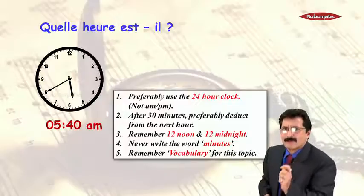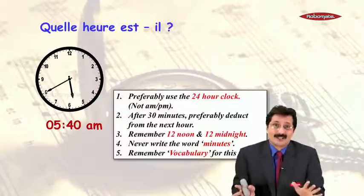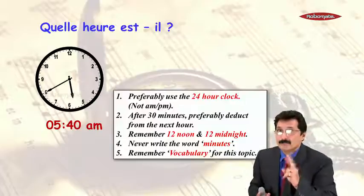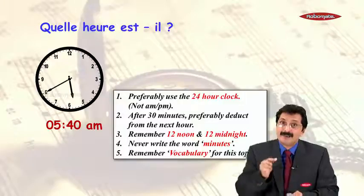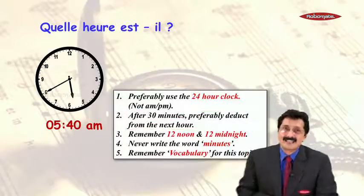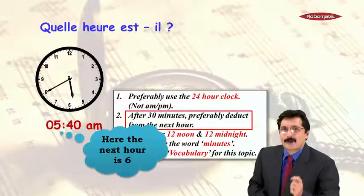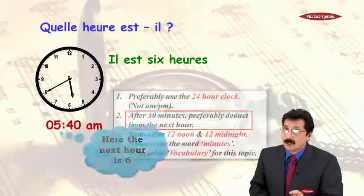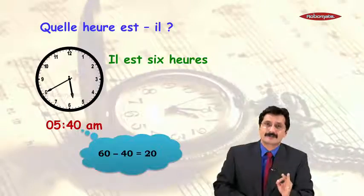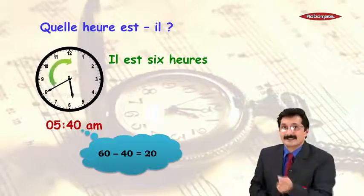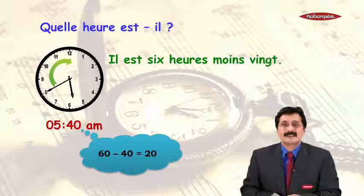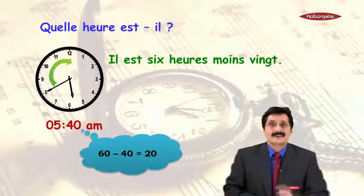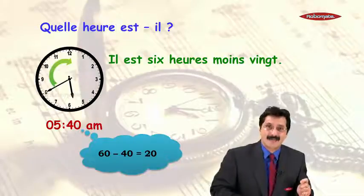Let's look at what we have learnt. First, preferably use the 24-hour clock — not applicable here because it's AM, so it's 5:40. Second, after 30 minutes, preferably deduct from the next hour. The next hour is six, and 60 minutes minus 40 minutes equals 20 minutes. So we are going to write 'il est six heures moins vingt'.